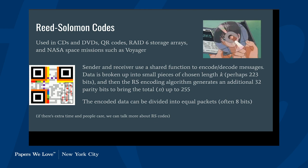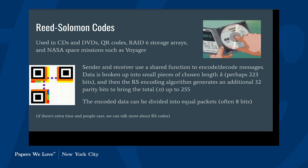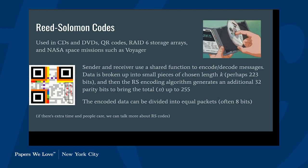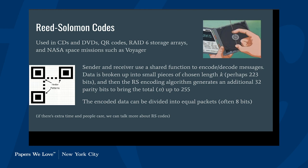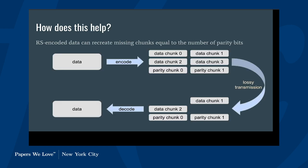You have a pre-agreed upon function between the sender and receiver to encode and decode. Your data gets broken up into pieces. In RS codes, all the parity bits go on the end, so you can identify which pieces are data and which are parity. But in the end it doesn't matter much, because as long as you get enough pieces, you're able to reconstruct your data out of any of them — even if it doesn't include any of the original data pieces.